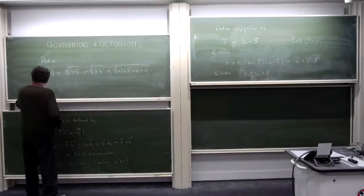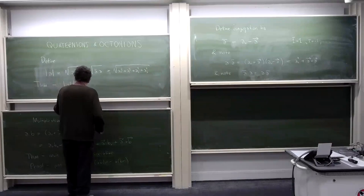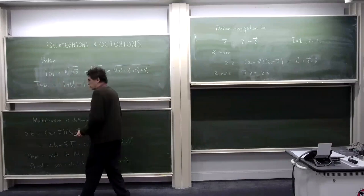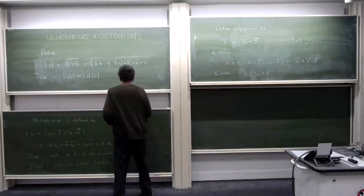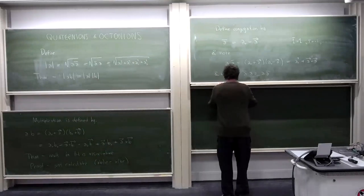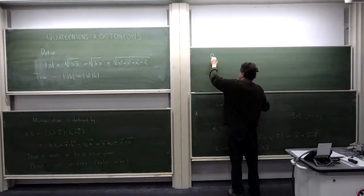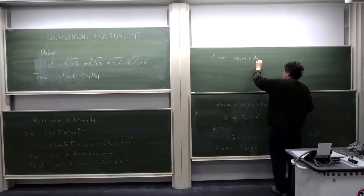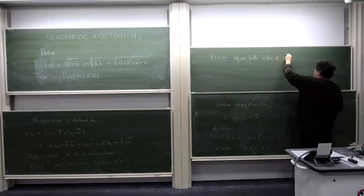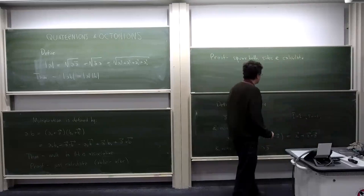There's a theorem — the real thing that makes quaternions great — that the norm of a product equals the product of the norms. This is the normed division algebra property. The proof consists of calculating it out; you square both sides and use vector identities such as A dotted with the cross product of A and another vector being zero.